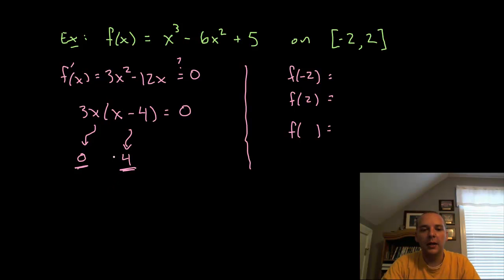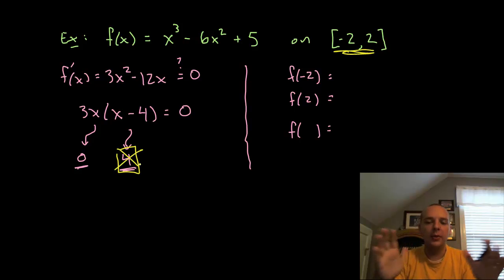Now one thing to keep in mind. Look at this point here, the point four. You remember how I said that we had to have an interval defined. Well here it is minus two to two. Four falls outside those bounds. So I do not need to take f of four. It's not within the restricted interval I.